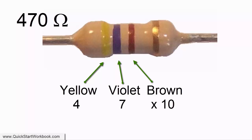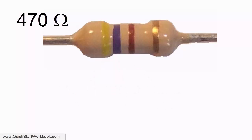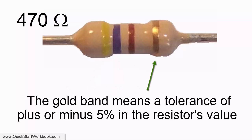You can then put these two numbers together which gives you 47 and then multiply them by 10 which is indicated by the brown band. The gold band at the end means that the actual resistance value will be somewhere in between plus or minus 5 percent.